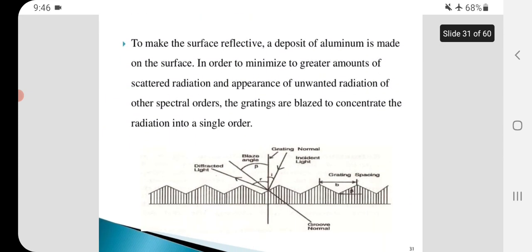To make the surface reflective, a deposit of aluminum is made on the surface. In order to minimize greater amounts of scattered radiation and appearance of unwanted radiation in other spectral orders, the gratings are blazed to concentrate the radiation into a single order.